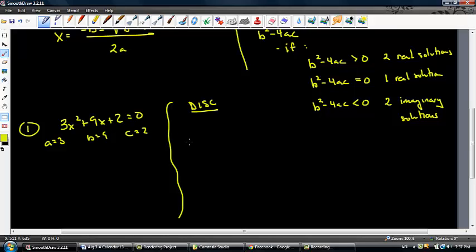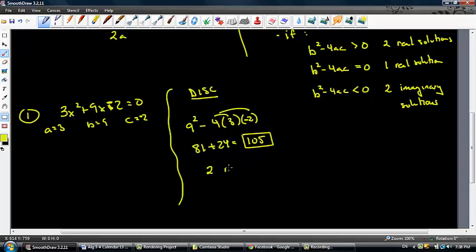So the discriminant is b squared minus 4ac. That would be 9 squared minus 4 times 3 times 2. I'm sorry, I made a tactical error here. That's supposed to be a negative 2. Make sure you change that. I have 81 minus 12 times negative 2 is negative 24, so minus negative 24 is positive 24, which equals 105. So that's my discriminant. I have a positive number in my discriminant, so I have two real solutions.